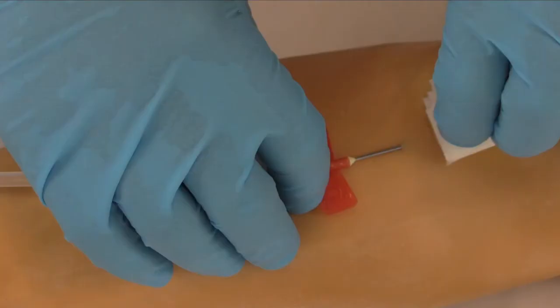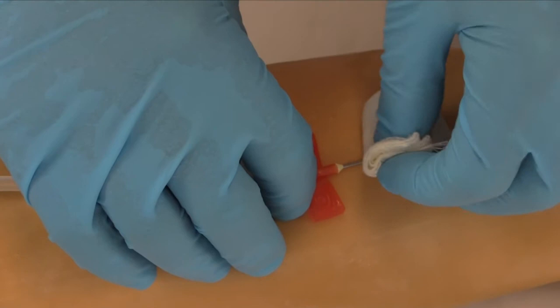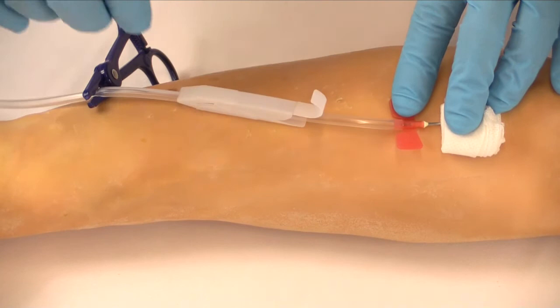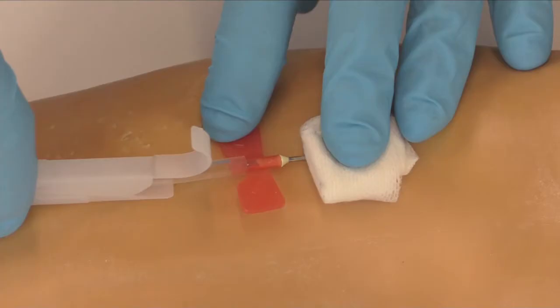Identify the venipuncture site. Place hemostasis dressing over the venipuncture site and gently hold it in place. Do not apply hemostasis pressure until the needle is removed from the insertion site.